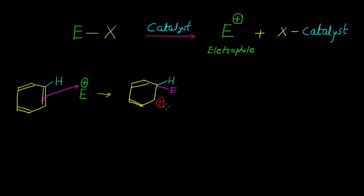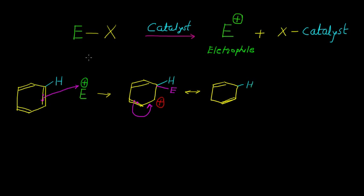This intermediate, or the positive charge which is present in this intermediate, can be shifted in this benzene ring. The electrons which are present in this pi bond will donate like that, and in the next step we can write the resonance structure. This bond will remain as it is, and there is formation of a new carbon-carbon double bond. This hydrogen as well as the electrophile will remain as it is on this carbon.